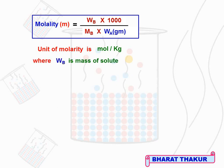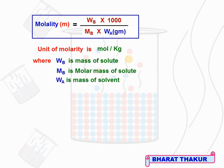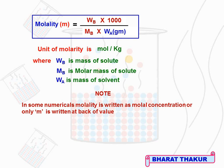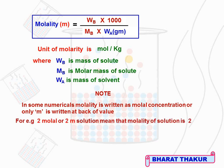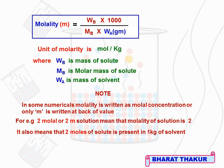Please note the final formulas for mole fraction, number of moles, molarity, and molality as these are most important for the upcoming numericals. In some numericals, molality is written as molal concentration or small m after the value — for example, 2 molal or 2m solution means molality is 2. This means 2 moles of solute are present in 1 kg of solvent. Knowing molality helps identify moles of solute and weight of solvent.